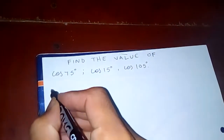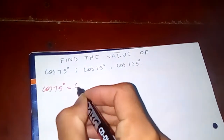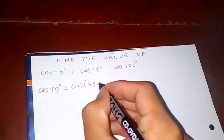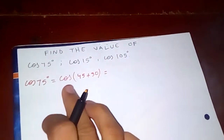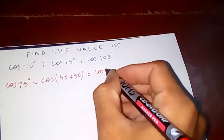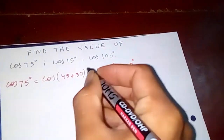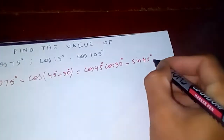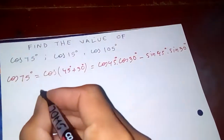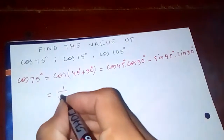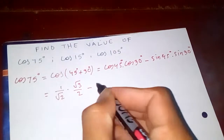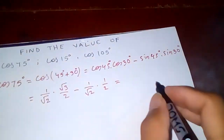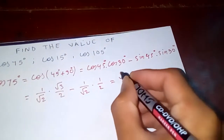Cos 75 degrees — I can write this as cos(45 + 30). We are going to use the cos(A + B) formula, which is cos A cos B minus sin A sin B. So cos 45 is 1/√2, cos 30 is √3/2, minus sin 45 which is 1/√2, and sin 30 is 1/2.